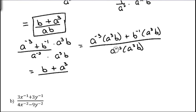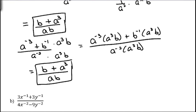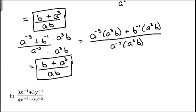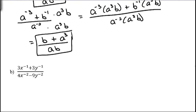And down here we have a to the negative second times a cubed. Adding the exponents, we get a to the first, so that's a, and then b. So again, either way is fine — you just pick the one that you're more comfortable with.